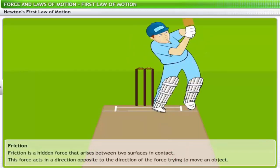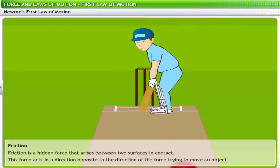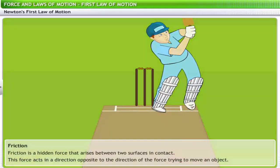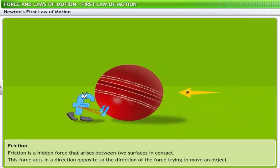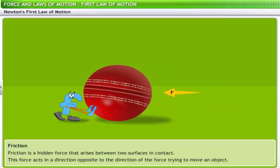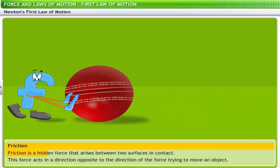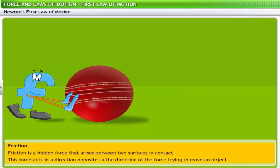You may have questions about the validity of this law — this is not how things really work around you. For example, if a batsman strikes a ball, the ball eventually comes to a stop no matter how forcefully it is hit. This has been explained through the concept of friction. Friction is a hidden force that arises between two surfaces in contact, acting in a direction opposite to the direction of the force trying to move an object. Friction is used in our daily lives to slow down and stop moving objects.